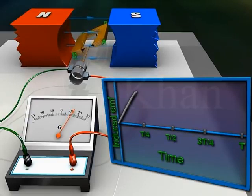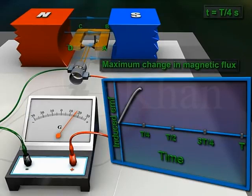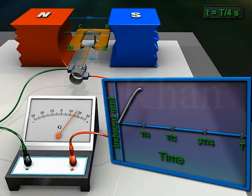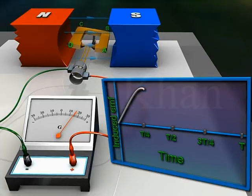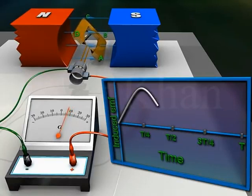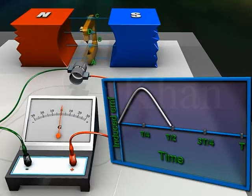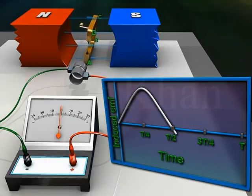During the first quarter rotation, the induced EMF increases. Then at time T/4 seconds, the armature becomes horizontal — at this position the rate of change of magnetic flux momentarily attains the maximum value, so the induced EMF is maximum. During the second quarter rotation, the induced EMF decreases. Then at time T/2, the armature again becomes vertical and the induced EMF is zero.